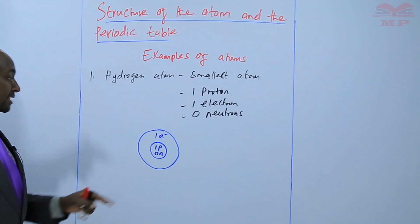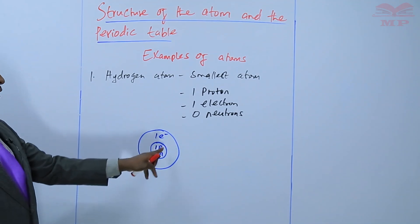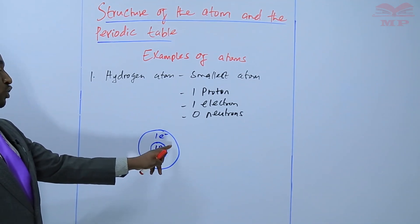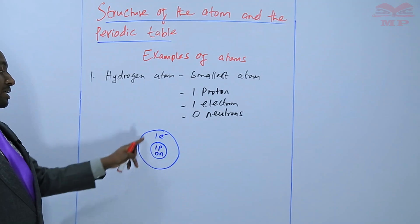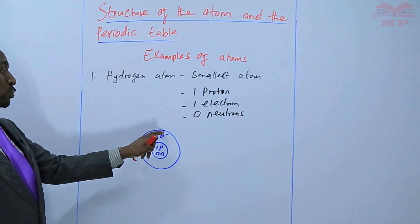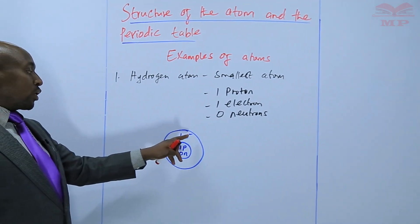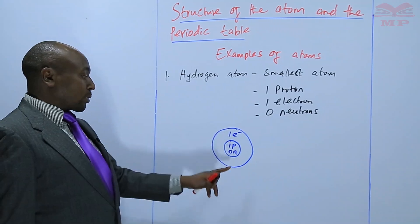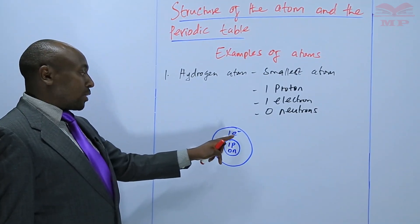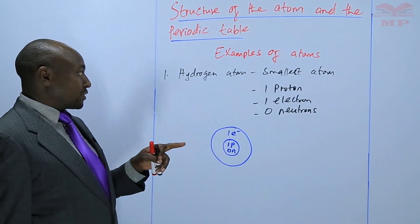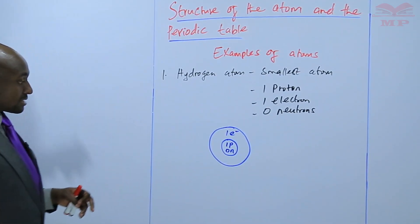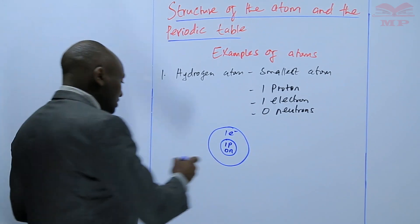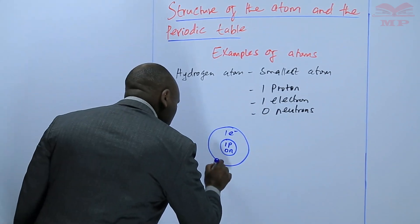Remember, we said that electrons are not found within the nucleus. They are found in the region outside the nucleus, which we call the energy levels. So, one proton, zero neutrons, and one electron. Hydrogen is the smallest atom.